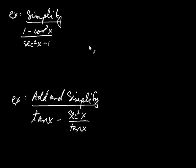Let's simplify (1 − cos²x) / (sec²x − 1). The numerator might look like sine squared, but since secant is 1 over cosine, let's rewrite the denominator. So we have (1 − cos²x) divided by (1/cos²x − 1), and then we'll clear that fraction by multiplying top and bottom by cos²x.